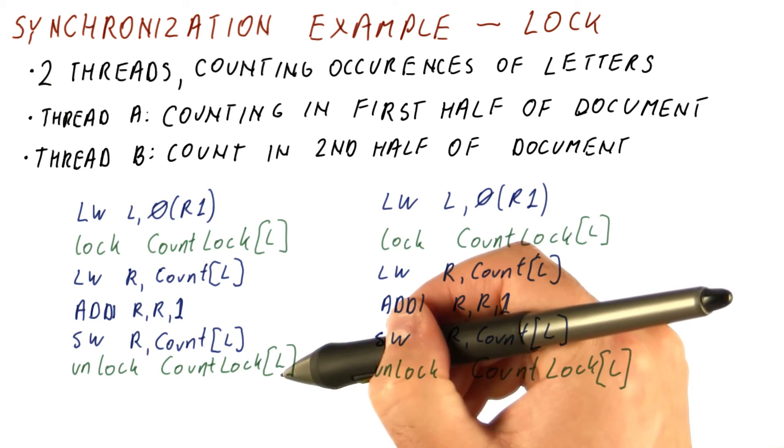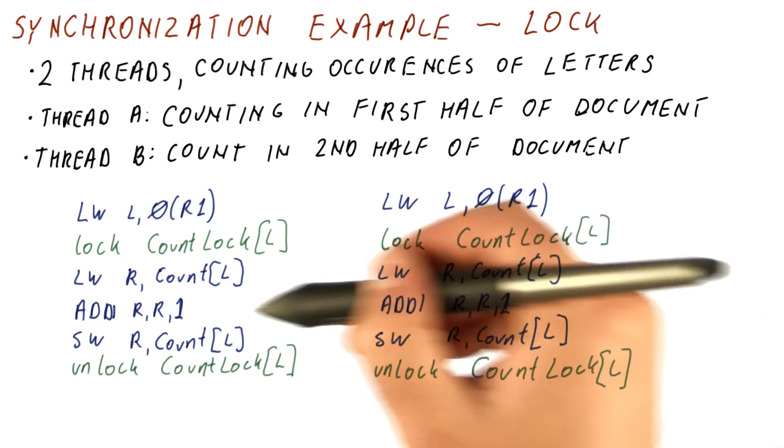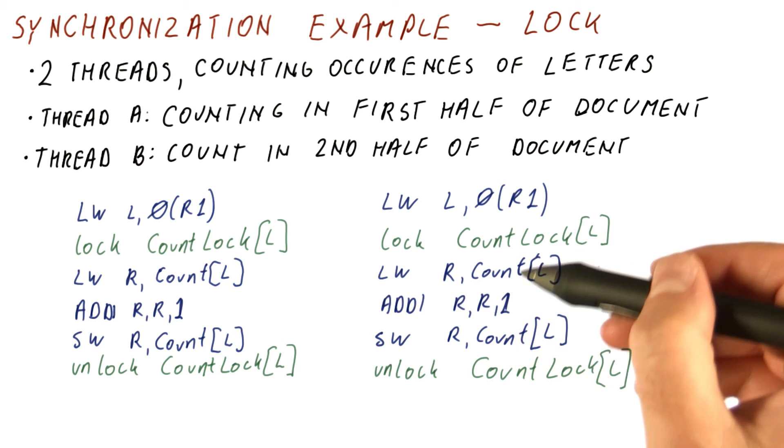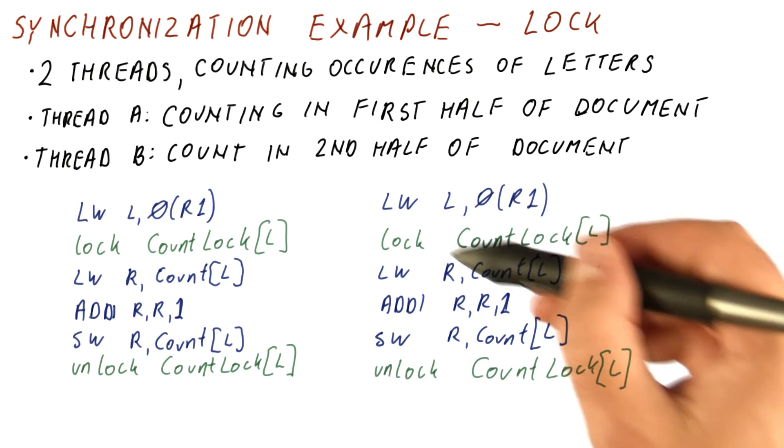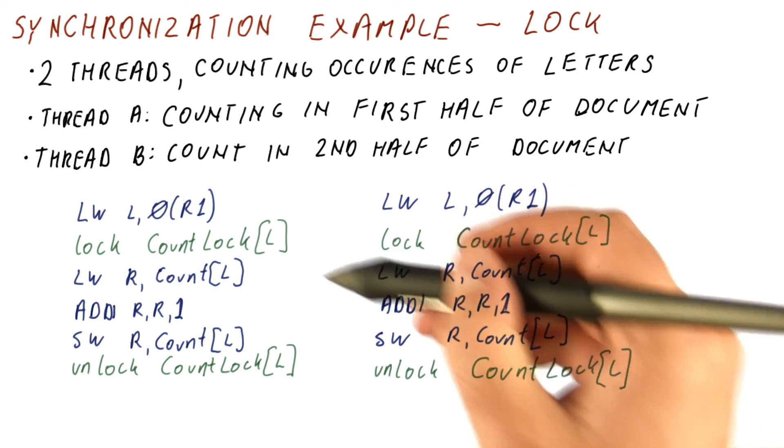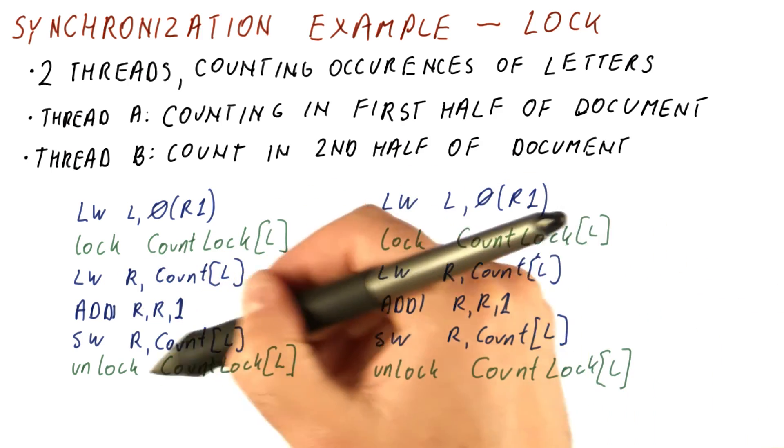What the lock is really preventing is interleaving where these are happening simultaneously. But it doesn't prevent, for example, this second thread doing this first, and only then the first thread gets to do it.